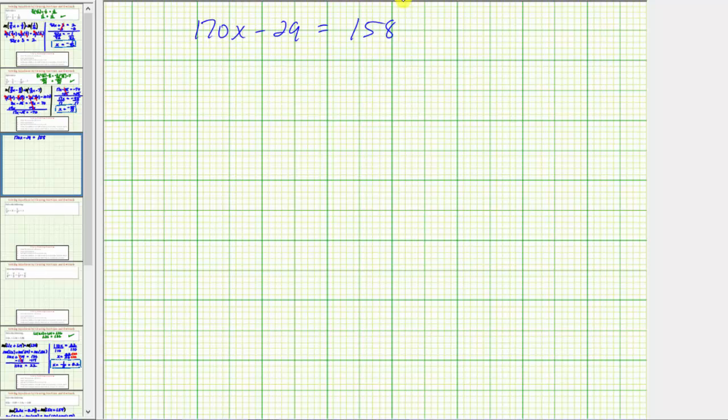The next step is to add or subtract to isolate the variable term, which means we want to undo minus 29 by adding 29 to both sides of the equation. Simplifying both sides, plus 29 undoes minus 29, or negative 29 plus 29 is 0, and therefore we have 170x equals 158 plus 29.